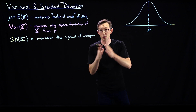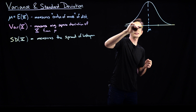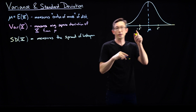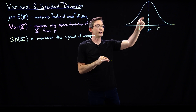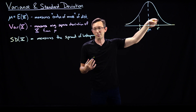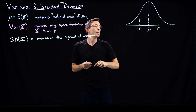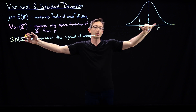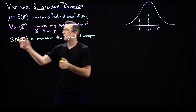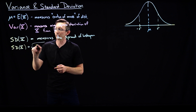For example, in the Gaussian normal distribution, the standard deviation gives these plus-or-minus sigma points, where inside of plus or minus one sigma, about 68% of the distribution lives. Then you have two sigma, three, four, five. So mu measures the center of mass, standard deviation measures the spread, and the standard deviation SD of x is just the square root of the variance of x.